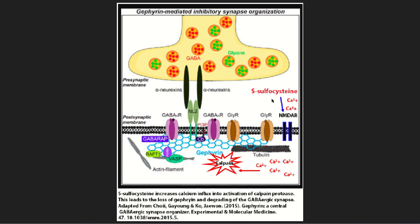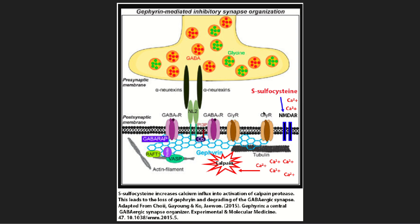We used to think NMDA receptors were just in the nervous system, but they're in our entire body — lots of cells have them. So I decided to think about what would happen if S-sulfocysteine overstimulated NMDA receptors in an intestinal cell or any cell in the body. That's what this next slide covers. In the blood, the sulfite that eventually forms down here — if you read the thesis statement, I believe there's an interplay between the transsulfuration pathway and the immune system or the hypoxia pathway.